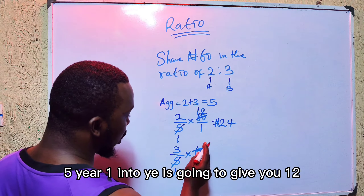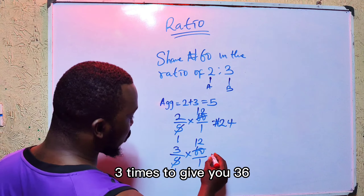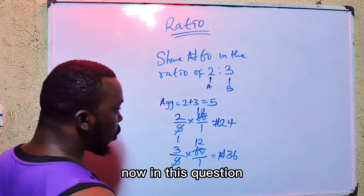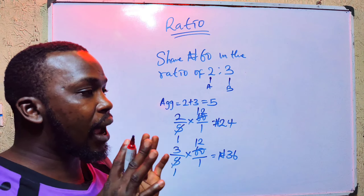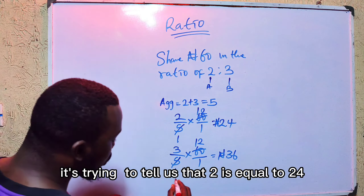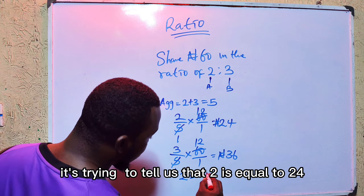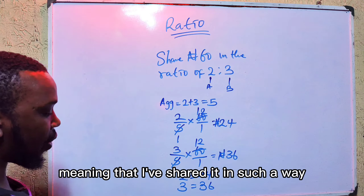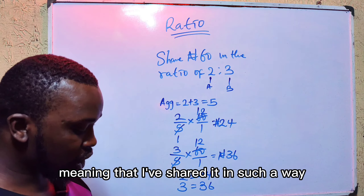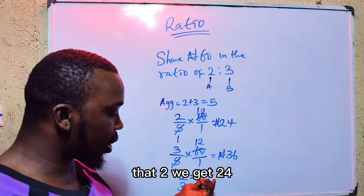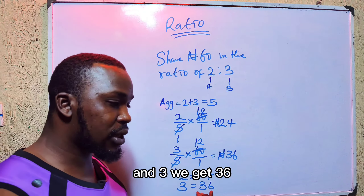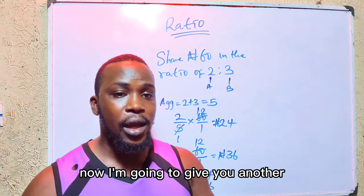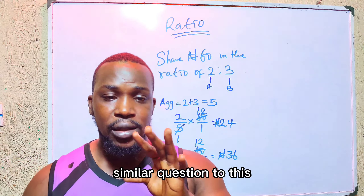Looking at the question on the board: in a board there are eight women and 12 men. Find the ratio in its simplest form of men to women. The number of men in this question is 12 men, and the number of women is eight women.